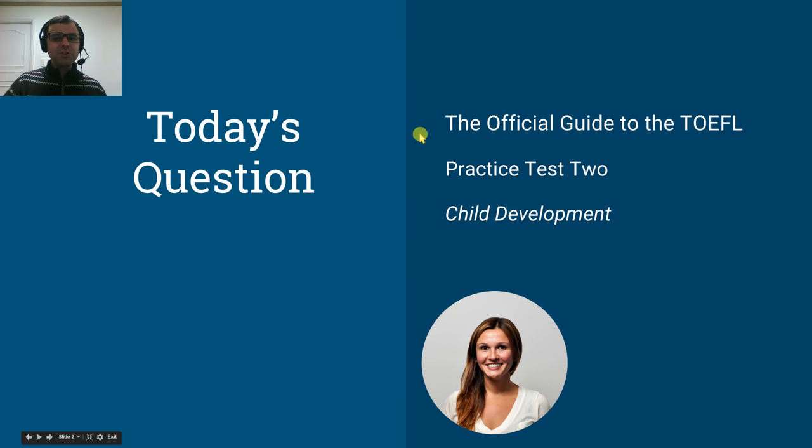As always, in the video, we are using as a practice question something taken from the official guide to the TOEFL, that is a textbook published by ETS. This particular question is from Practice Test 2, which is a question about child development. Now you don't need the textbook in front of you for this video. I'm not going to give you the question here because it's owned by ETS, but the purpose of this video is to give you universal strategies that work for every type six question. So no matter what the actual topic is or what the content is, the strategies will work.